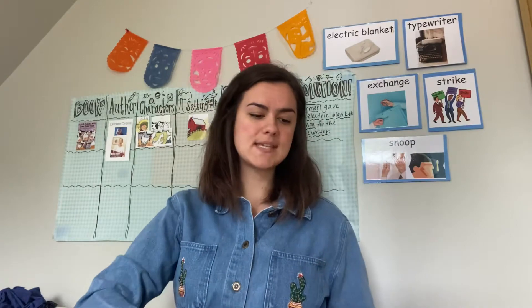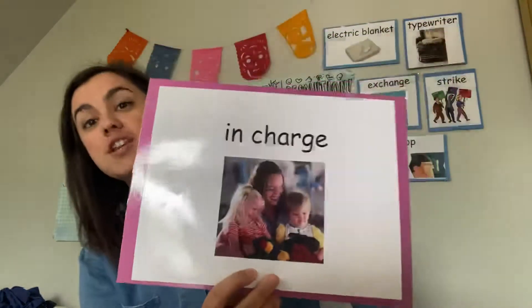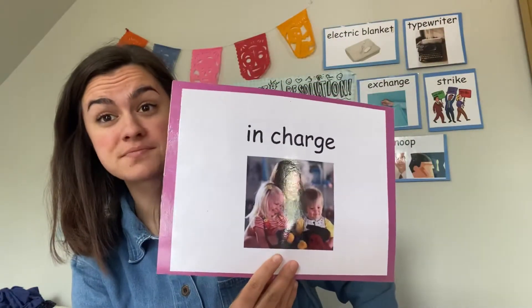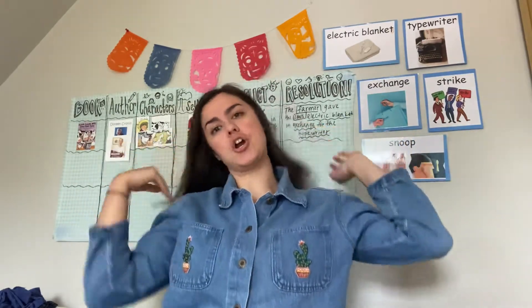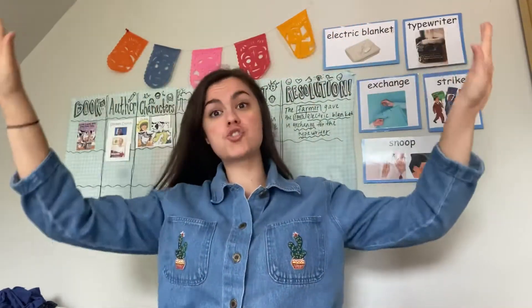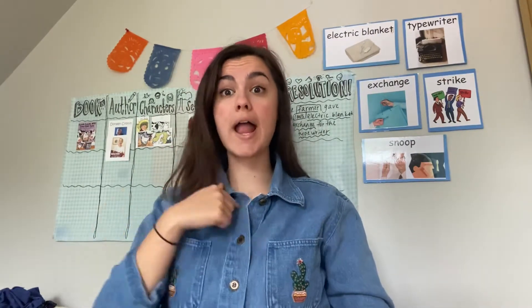We are going to first talk about some of the words you might see in this book before we begin to read. So the first word I want to show you is 'in charge.' Can you say 'in charge'? Go like this and say 'in charge.' The person who is in charge is the person who is controlling the situation. For example, when we're at school, I'm in charge, which means I'm controlling our classroom to make sure everybody is safe and learning.